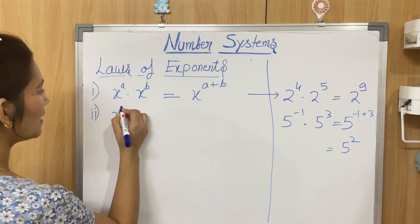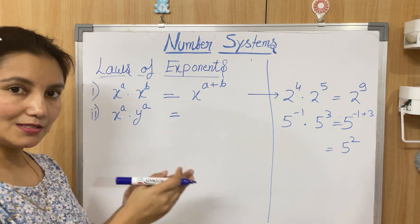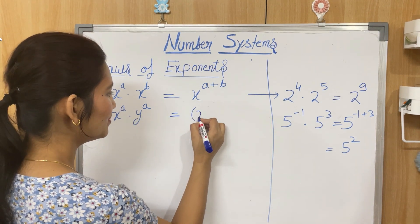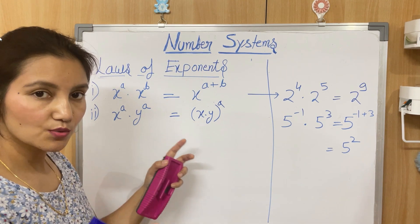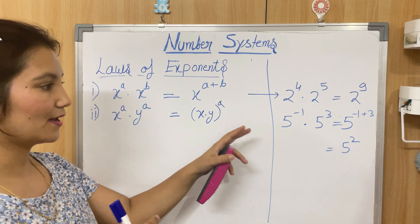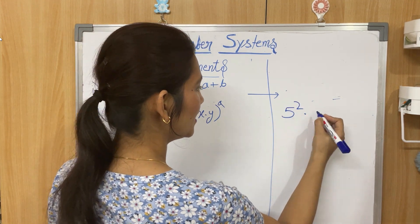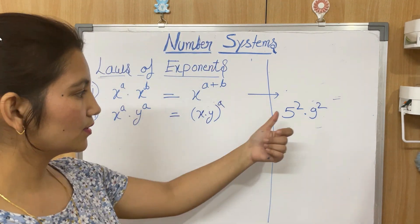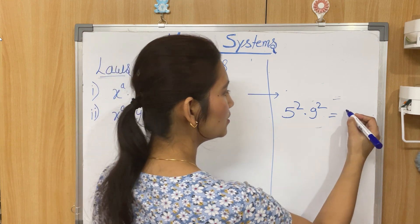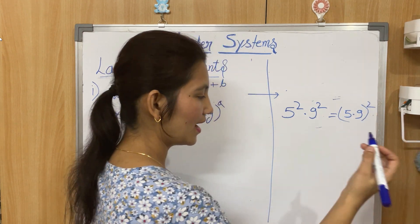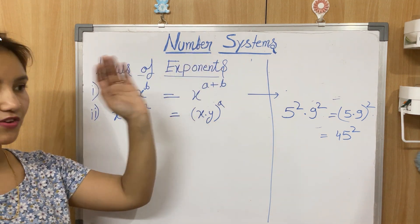The second law of exponents: x^a × y^a — if both numbers have the same power and are getting multiplied, we can simply write (x × y)^a. For example, 5² × 9² can be written as (5 × 9)² = 45². This is the second law of exponents.